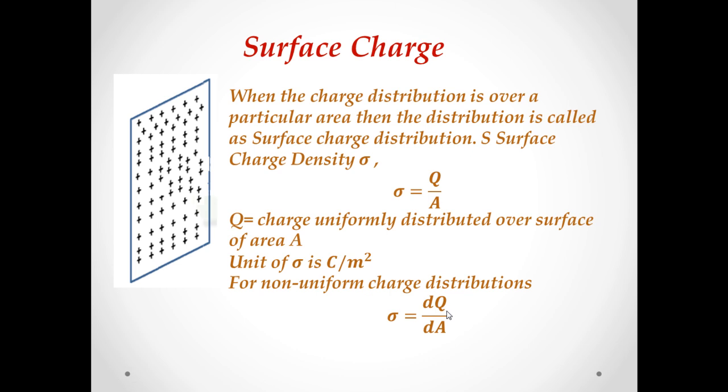If a charge Q is uniformly distributed over surface of area A, the surface charge density sigma is defined as sigma equals Q by A, and unit of surface charge density is coulomb per meter square. For non-uniform distribution, surface charge density would be sigma equals dq upon dA, where this dA is a small area element of charge dq.